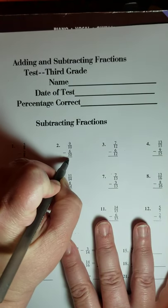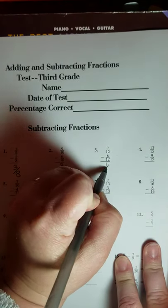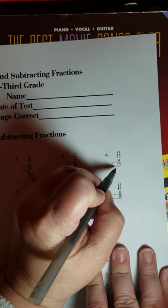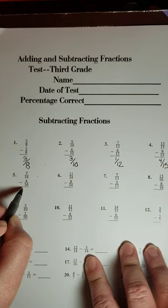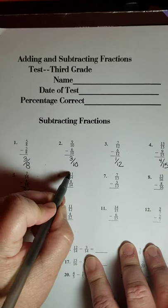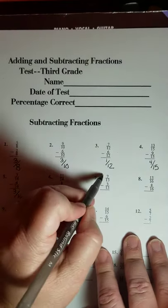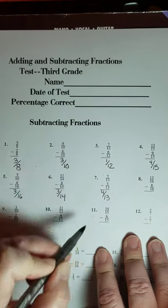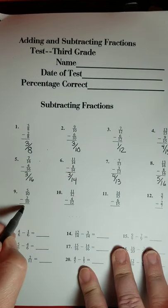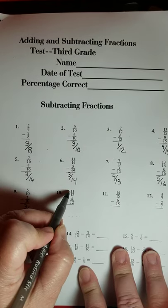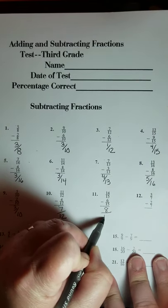9 tenths minus 6 tenths is 3 tenths. 7 twelfths minus 6 twelfths is 1 twelfth. 13 fifteenths minus 9 fifteenths is 4 fifteenths. 7 sixteenths minus 4 sixteenths is 3 sixteenths. 11 minus 8 is 3, so 3 fourteenths. 7 minus 3 is 4, so 4 thirteenths. 13 minus 8 is 5, five sixteenths. 5 minus 2 is 3, three tenths. 11 minus 4 is 7, seven twelfths.